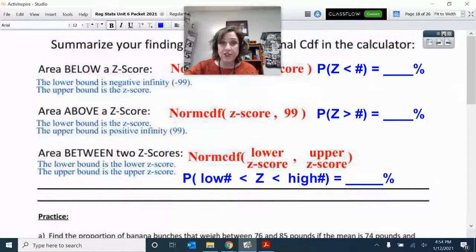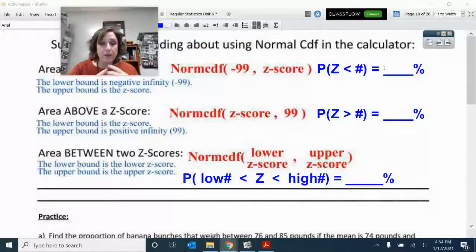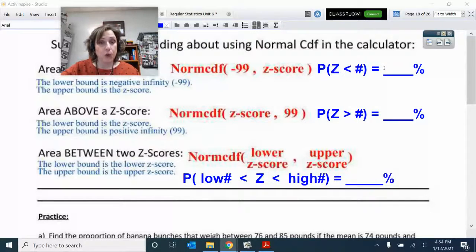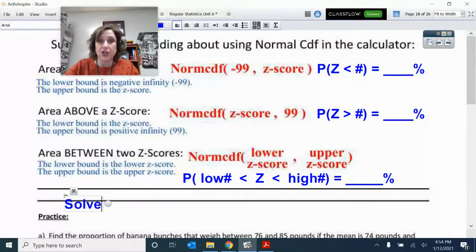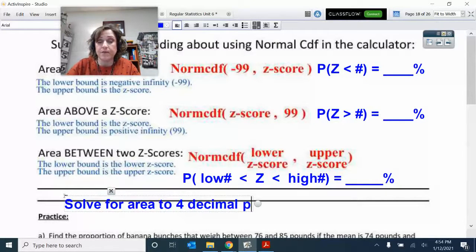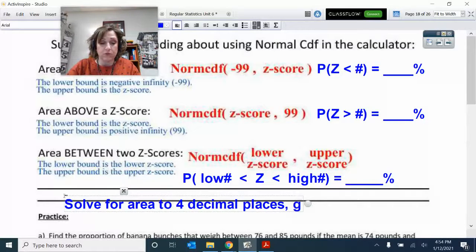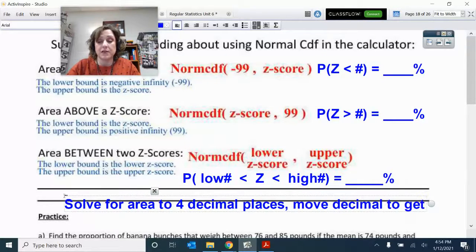These are the ways you want to make sure you use these probability notations. You solve for the area or the percent—the decimal to four decimal places—and then you move the decimal to get the percent.